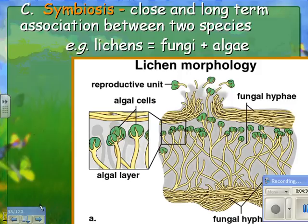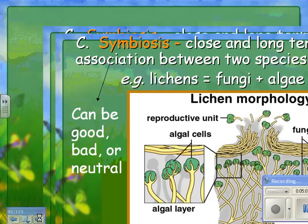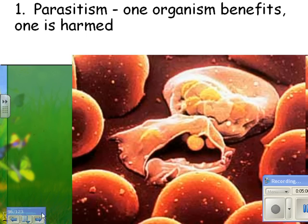Symbiosis is a close and long-term association between two species. For example, lichen are a symbiosis between fungi and algae — you'll see them while hiking, growing on rocks or occasionally on trees. They're leafy, not soft and fuzzy like moss. Symbiosis can be good, bad, or neutral for the organisms involved.